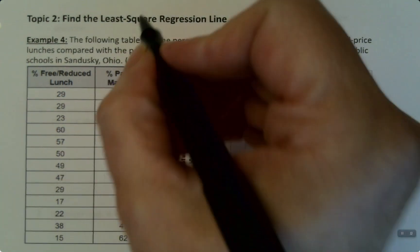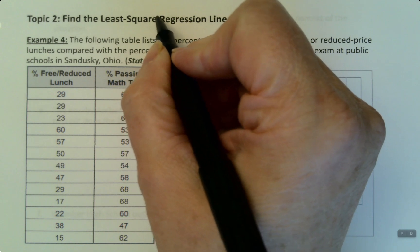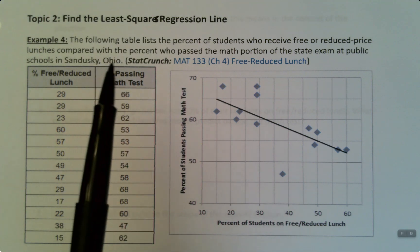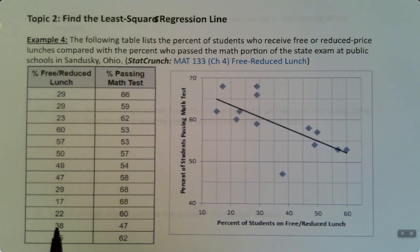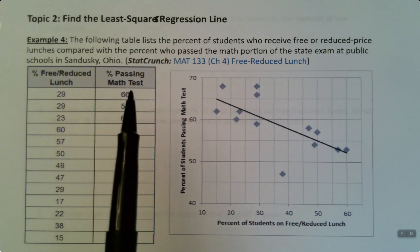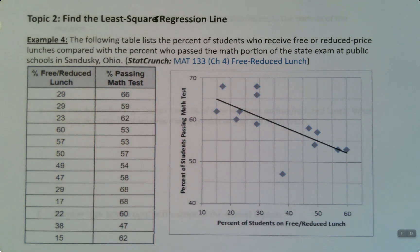So we're going to find the least squares regression line for the following data set. So we've seen this data set before, this is the real life data set of the free reduced lunch and the percent passing the math exam in Sandusky, Ohio.